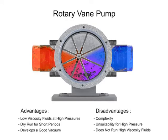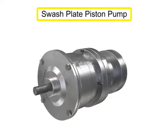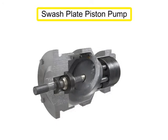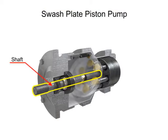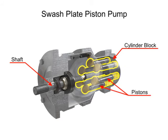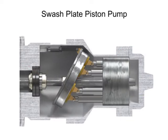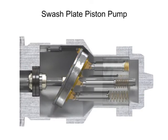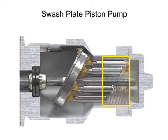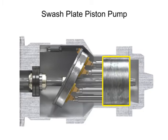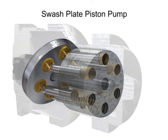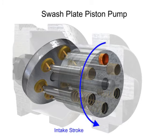Piston pumps come in many different forms. A swash plate is a device used to translate the motion of a rotating shaft into the reciprocating motion of a piston. Swash plate piston pumps have a rotating shaft connected to a cylinder block containing pistons, which are pressed against a stationary swash plate that sits at an angle to the cylinder. As the shaft rotates, the pistons move against the swash plate, causing them to reciprocate within the piston block. The pistons create a vacuum that forces fluid in during half a revolution and expels fluid during the other half.